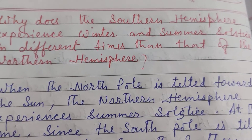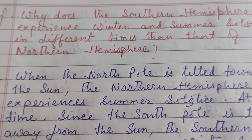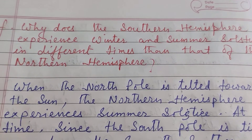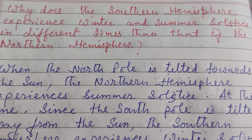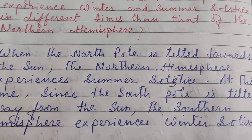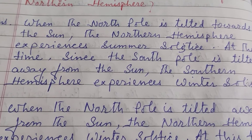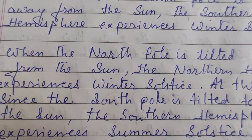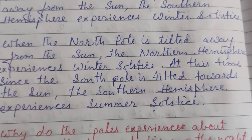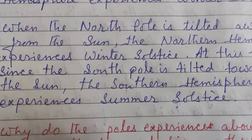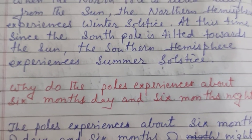Why does the southern hemisphere experience winter and summer solstice at different times than the northern hemisphere? When the North Pole is tilted towards the Sun, the northern hemisphere experiences summer solstice. At this time, since the South Pole is tilted away from the Sun, the southern hemisphere experiences winter solstice. When the North Pole is tilted away from the Sun, the northern hemisphere experiences winter solstice. At this time, since the South Pole is tilted towards the Sun, the southern hemisphere experiences summer solstice.